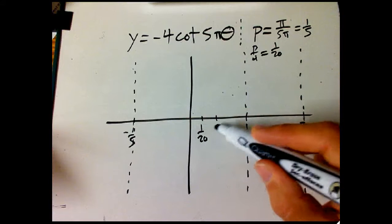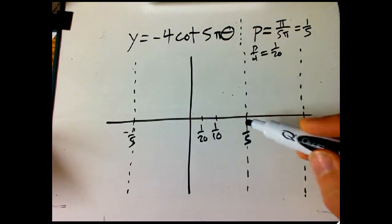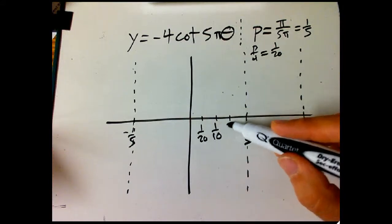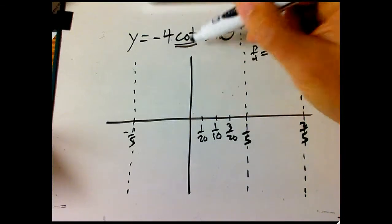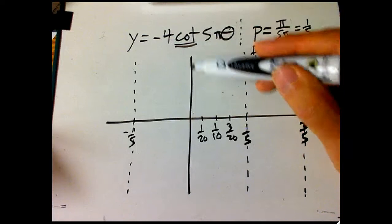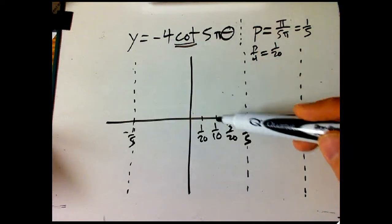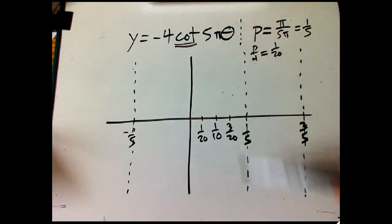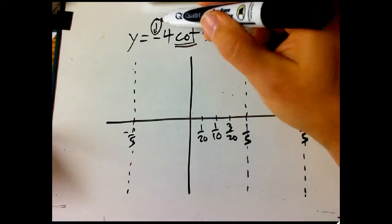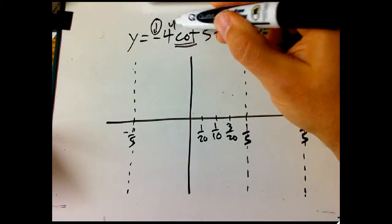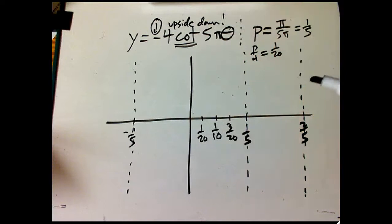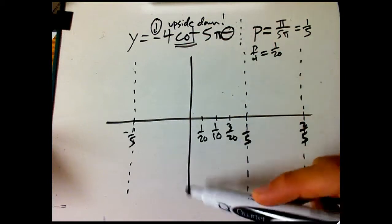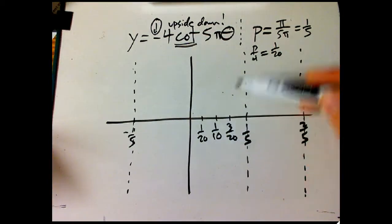Let's mark those quarter period points: one-twentieth, one-tenth, and three-twentieths. The usual cotangent starts high, comes through the x-axis, and goes low. But the minus sign means it's upside down, so it's actually going to start low, come through the axis, and end high.